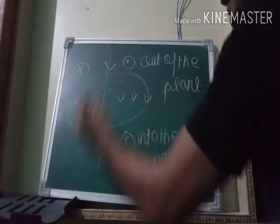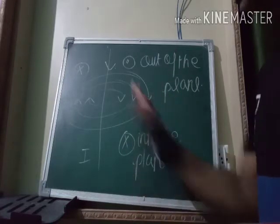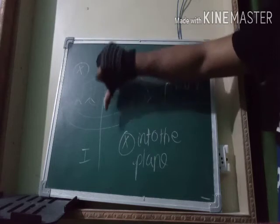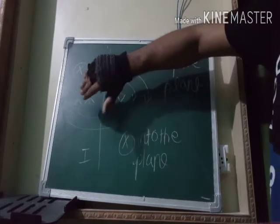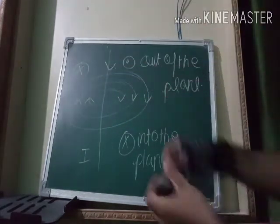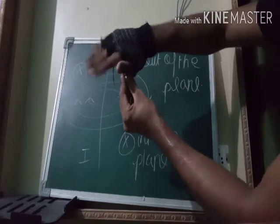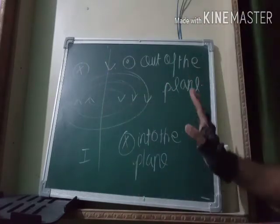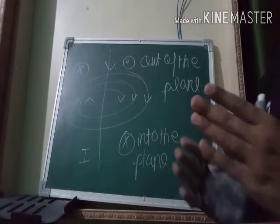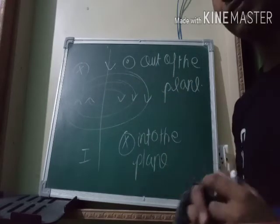Now if we reverse the direction of current — so current is going in the downward direction — we want to determine the new direction of magnetic lines of force. The shape remains the same: concentric circles. But the direction changes. Point your thumb downward and curl your fingers: on one side the lines go into the plane, and on the other side they come out of the plane. On reversing the current, the direction of magnetic lines of force also reverses.